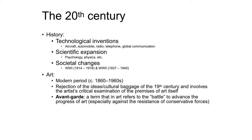When we get to the 20th century, certain historical events completely change how artwork appeared. As far as history: firstly, you have technological innovations — the invention of the aircraft, automobile, radio, telephone, and more global communication. Scientific expansion in psychology, physics, and other avenues. You also have societal changes: between 1900 and 1945, you have the rise of communism, fascism, Nazism, and the Great Depression. In World War I, between 1914 and 1918, there were around 20 million deaths. In World War II, between 1937 and 1945, there were 40 to 50 million deaths.